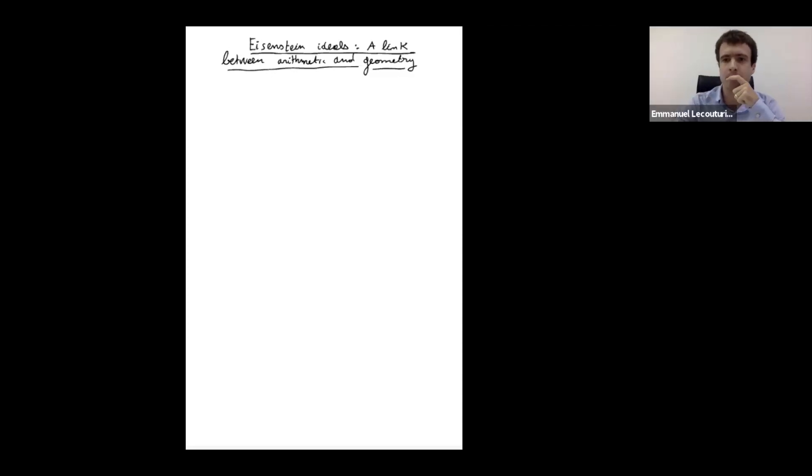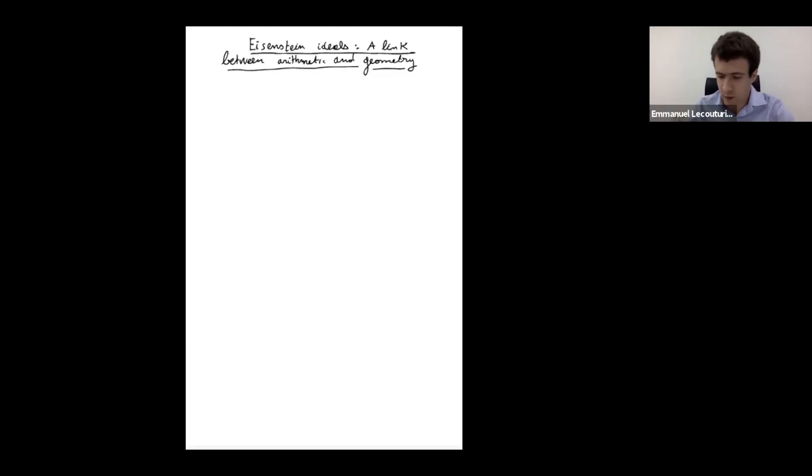Welcome to our third day of the postdoc talks. Our first talk is by Emmanuel Le Couturier from Beijing, and he will tell us about Eisenstein ideals — a link between arithmetic and geometry. Thank you for the invitation. Today I want to talk about some conjectures made by Amir Sharifi about a decade ago.